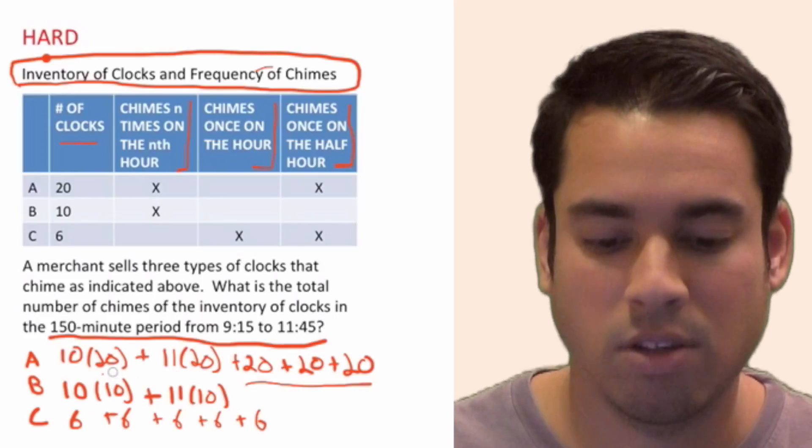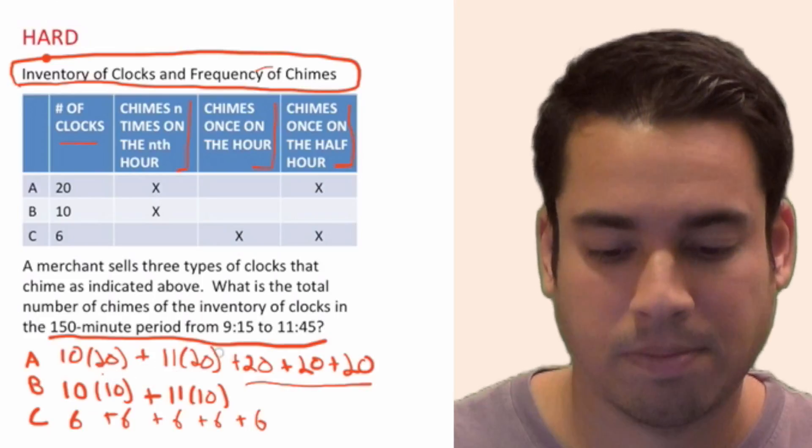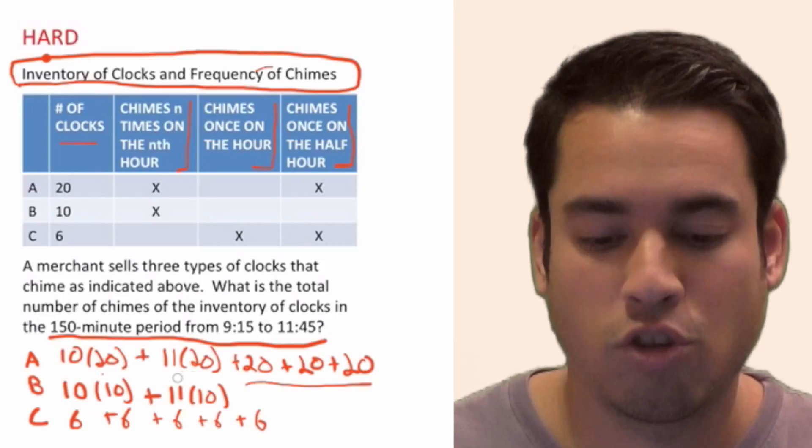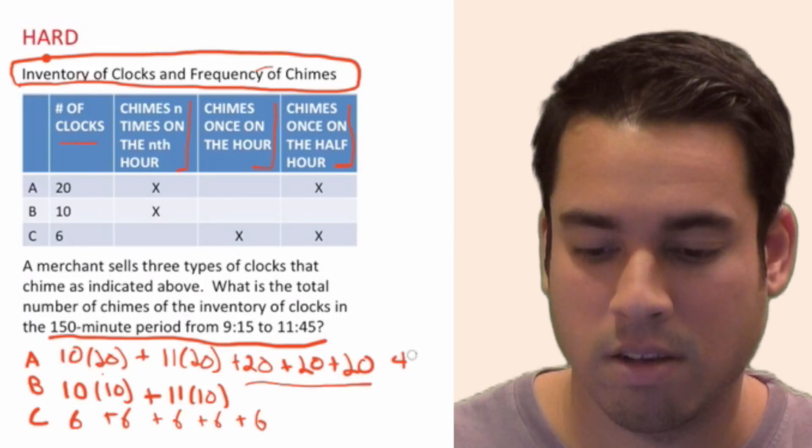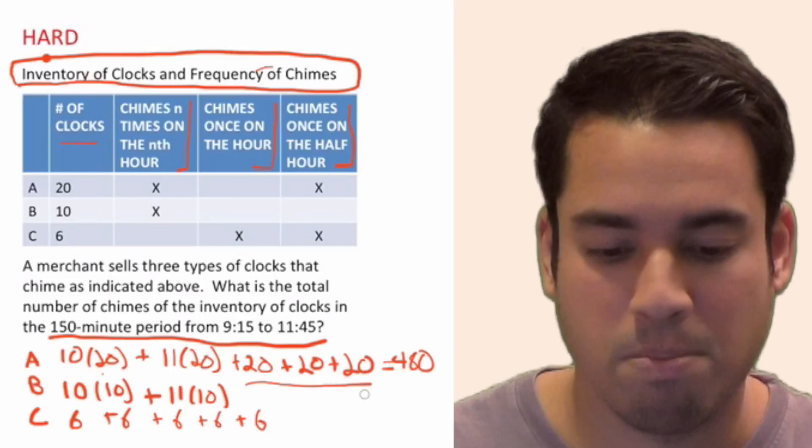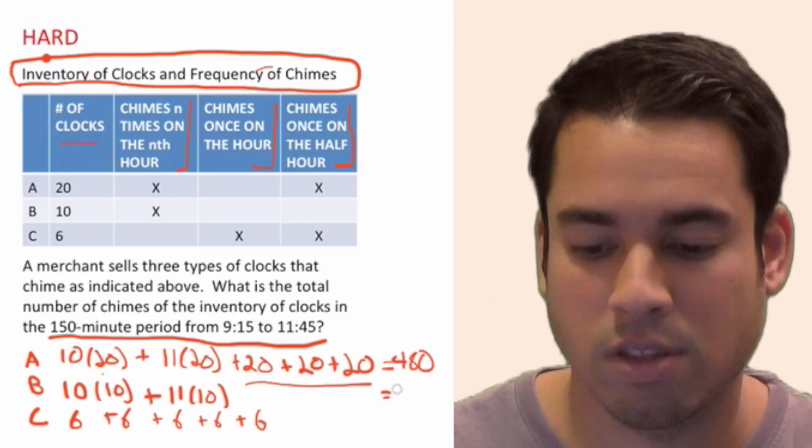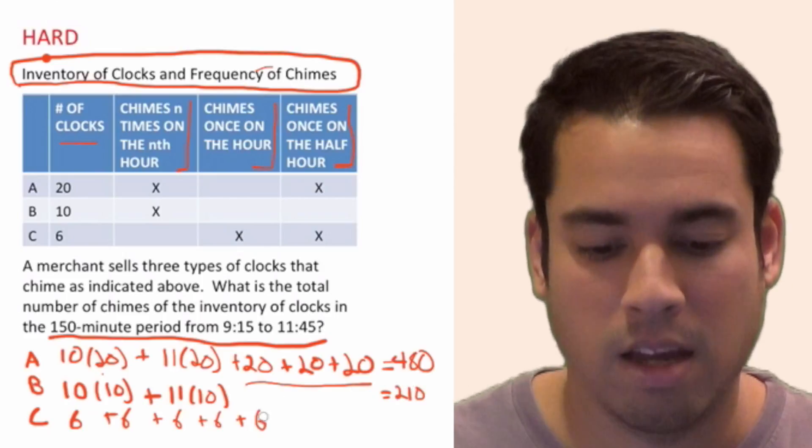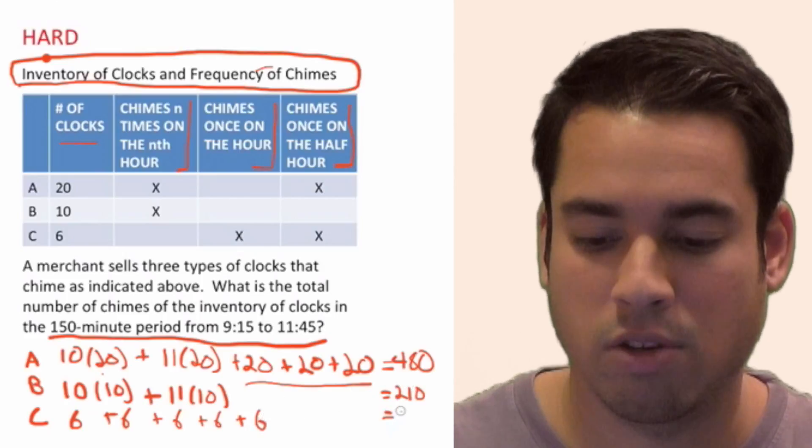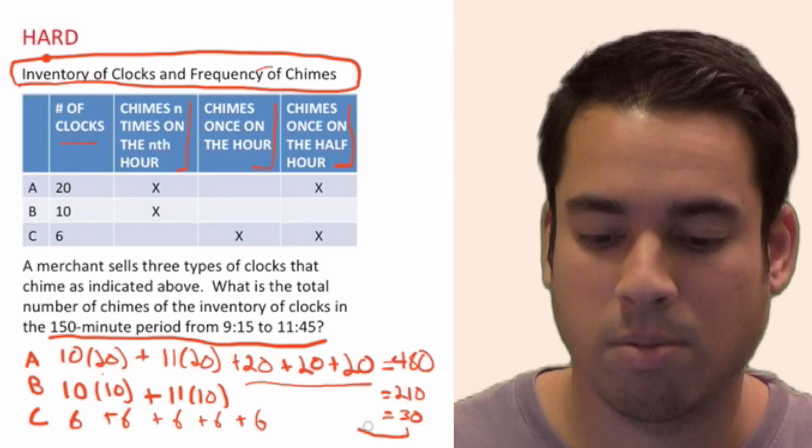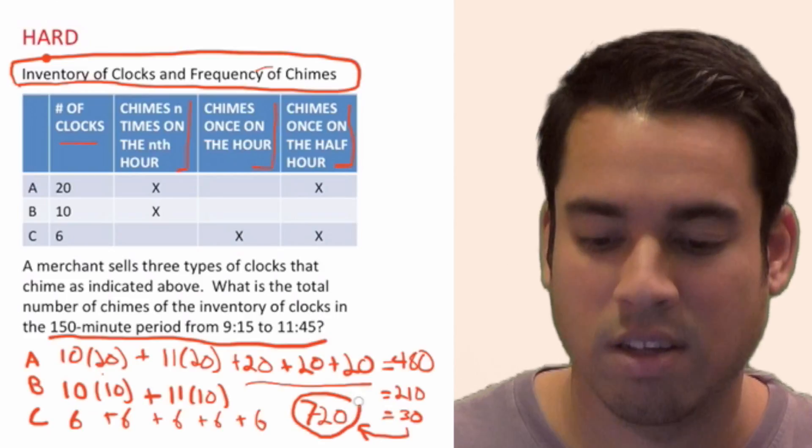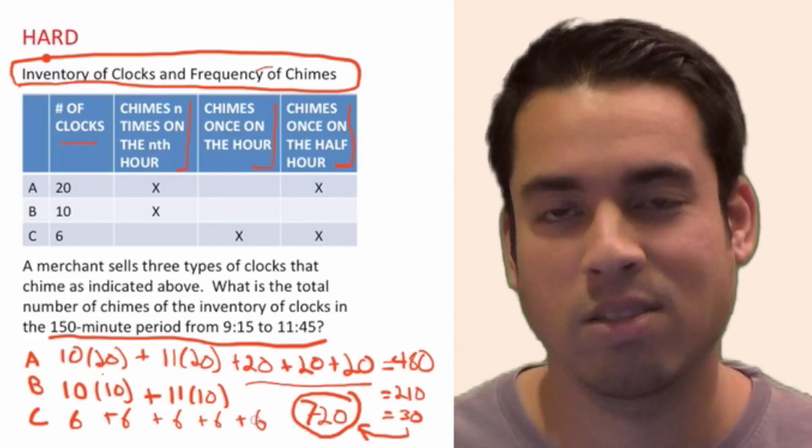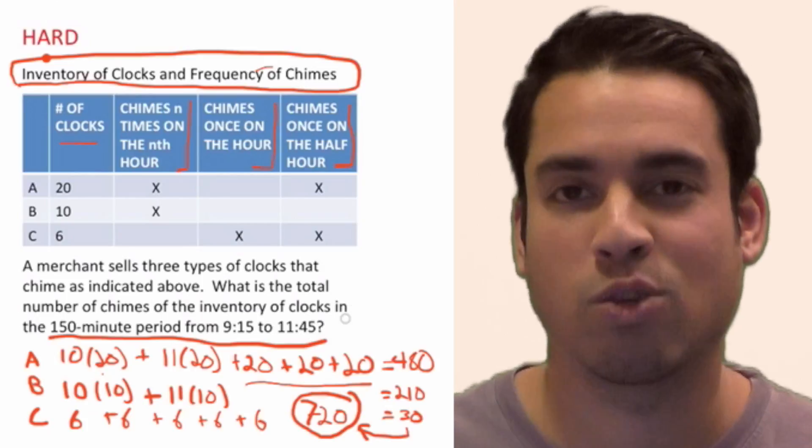And now all we have to do is add these up. So we've got 200 plus 220, so that's 420, plus 60 is 480 for A. Then for B, we just have 100 plus 110, which is 210. And for C, we have five times six, which is 30. So now if we're going to add all these up, we got 480, so 690, and the total chimes is 720. And there's no answer choices because this is a free response, one of those lovely free responses. And so you just put down 720, final answer.